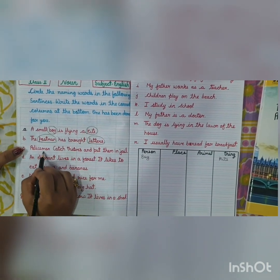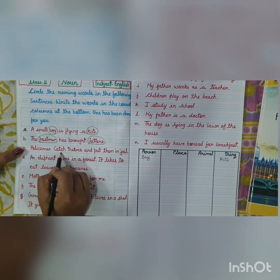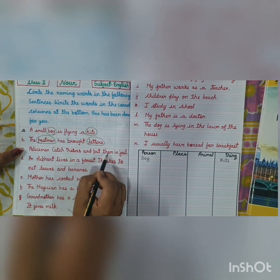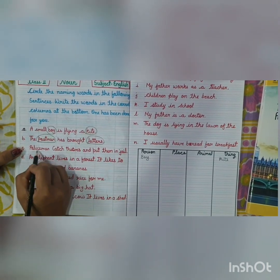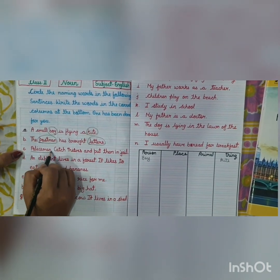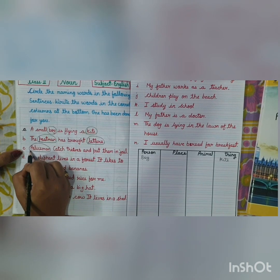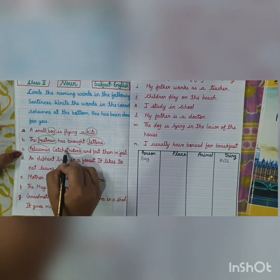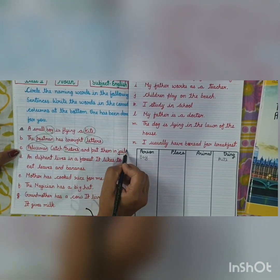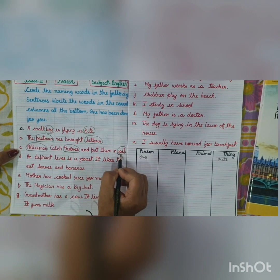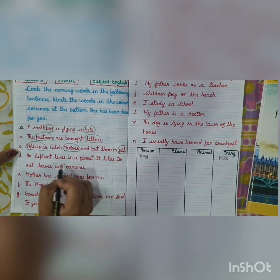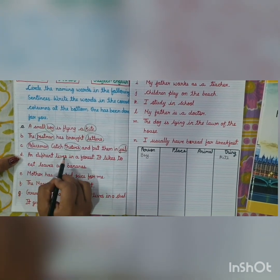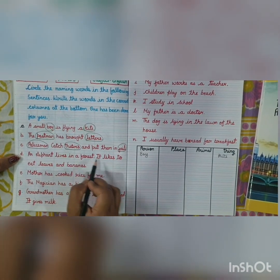Next: Policeman catches thieves and puts them in jail. Policeman is a person, thieves are also persons, and jail is a place.